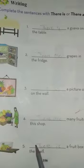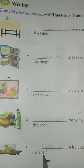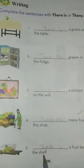Point five and last: 'There is a fruit box on the shelf.' Box is one, so we use 'there is.' Students, Allah Hafiz. Thank you.